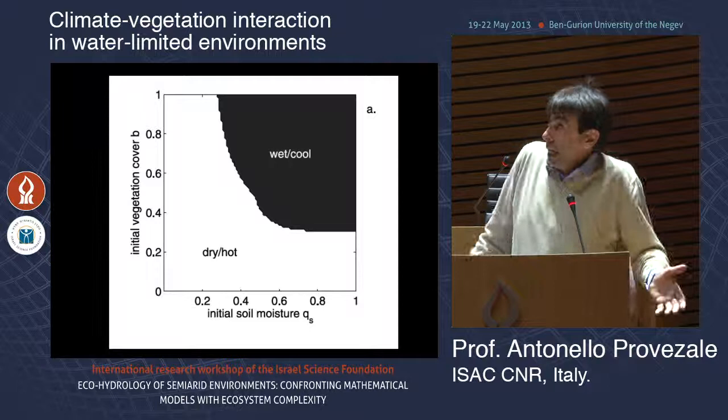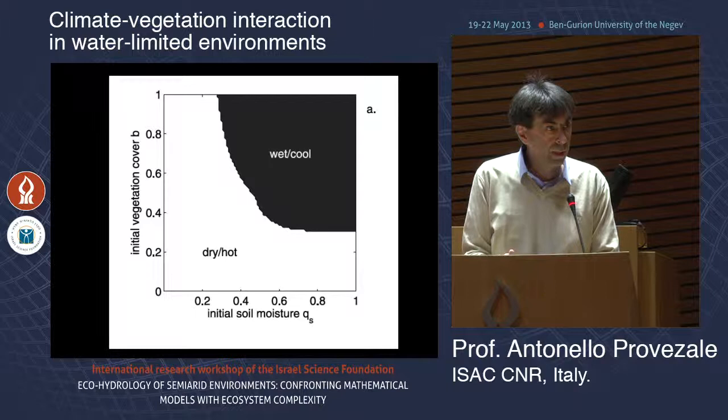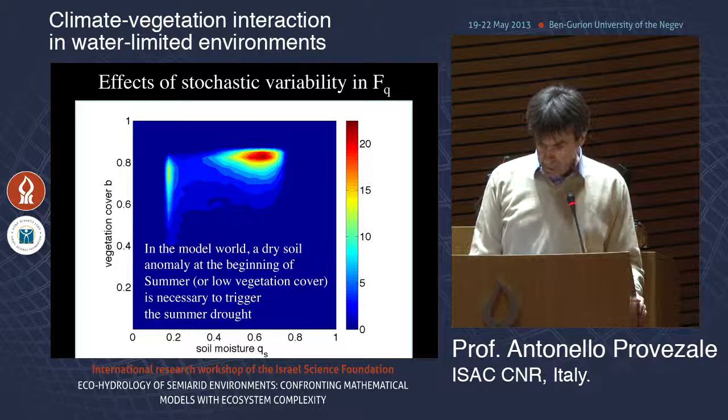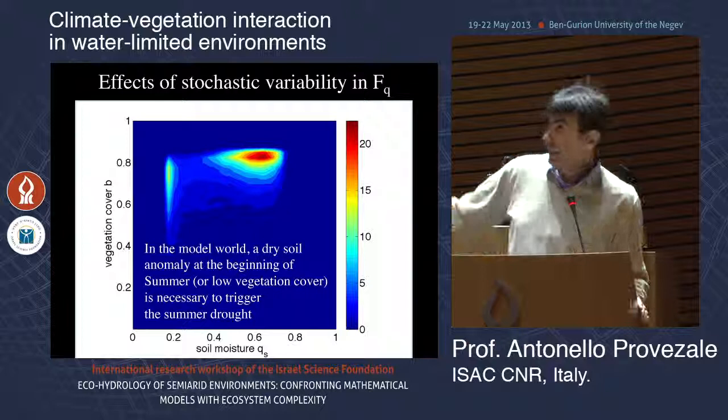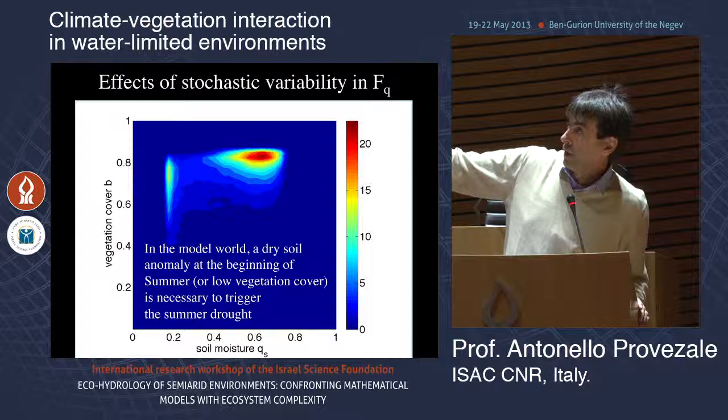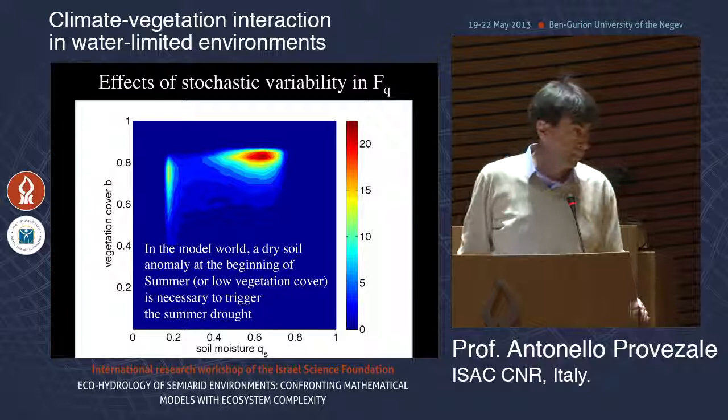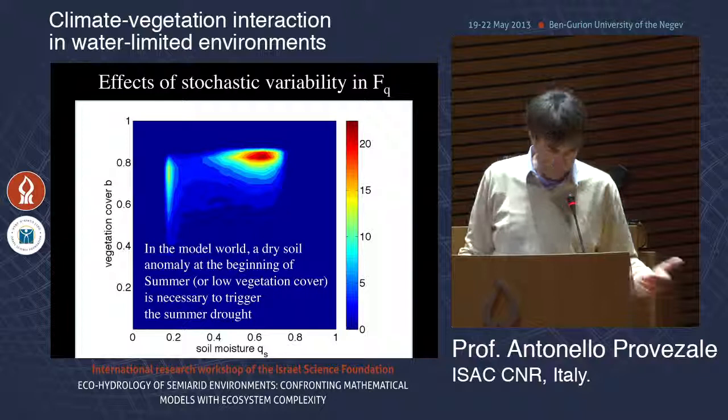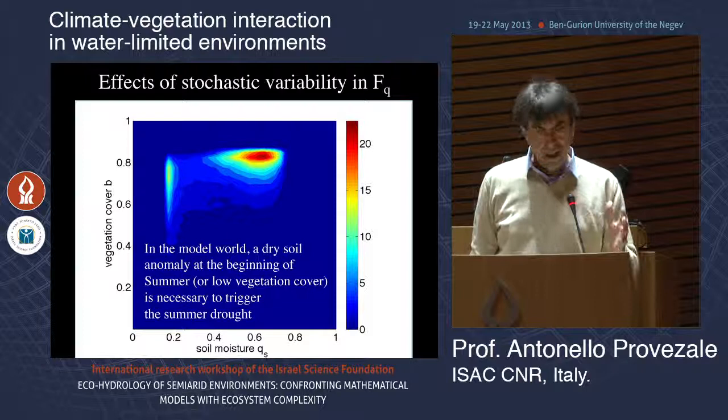The exact values depend on the model choices, but the overall picture is quite robust. This simple model tells you that you need a dry soil anomaly to get a summer drought. If you allow the moisture input to vary stochastically, you get a distribution: most summers are wet with larger soil moisture, but occasionally you get much drier summers, while vegetation cover does not change much.